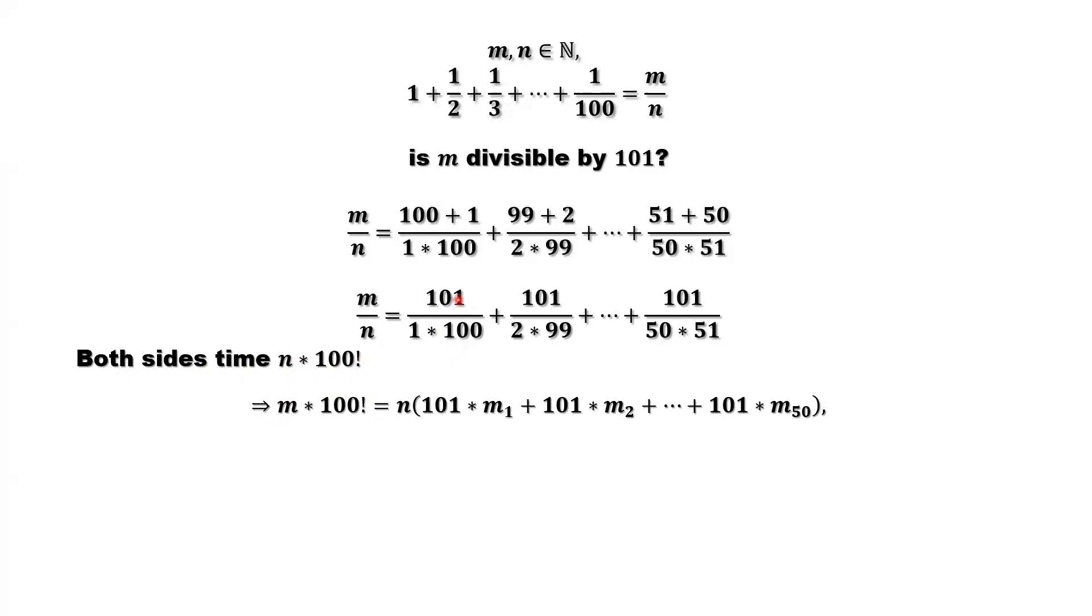100 times the first one, we have 101 here, and 100 factorial, and denominator that's 1 times 100. We can cancel some. For example, 100 cancel. Actually, that's 99 factorial. We use m1 for 99 factorial.